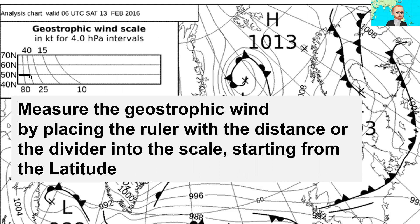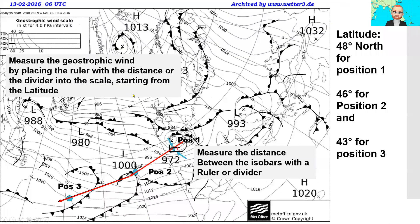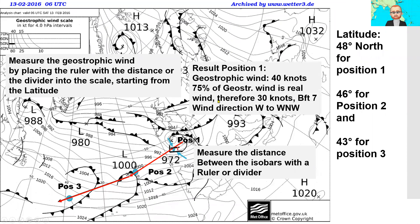This line will intersect 40 knots wind speed — so 40 knots is the geostrophic wind. 75% of that gives the real wind: 30 knots, or Beaufort 7. The wind direction is approximately west-northwest.